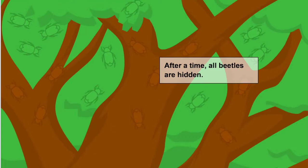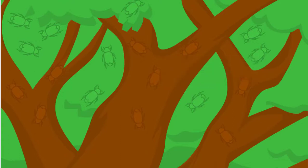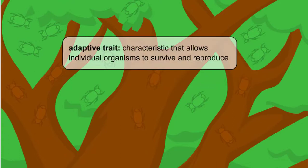If the bird eats any beetles, then it is just blind luck. This is called an adaptive trait, which means a characteristic that allows individual organisms to survive, to reproduce and create offspring.